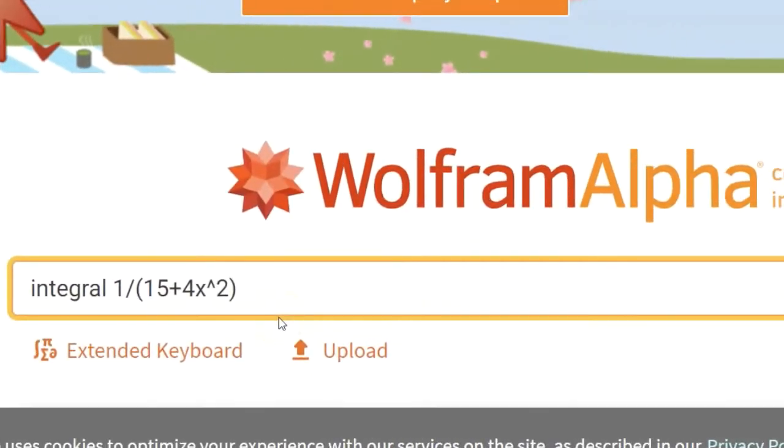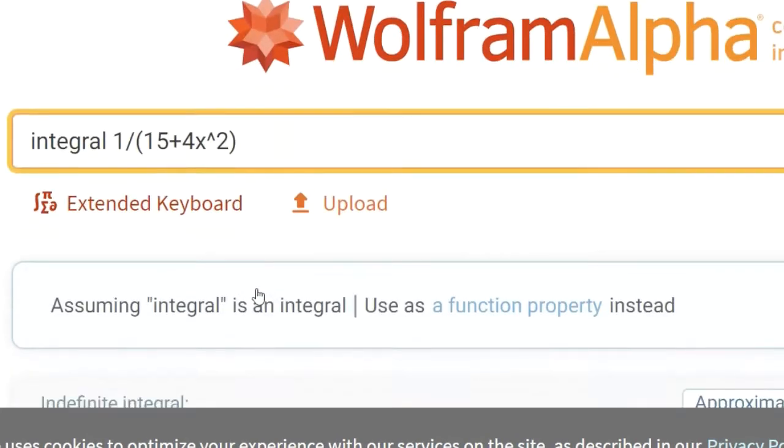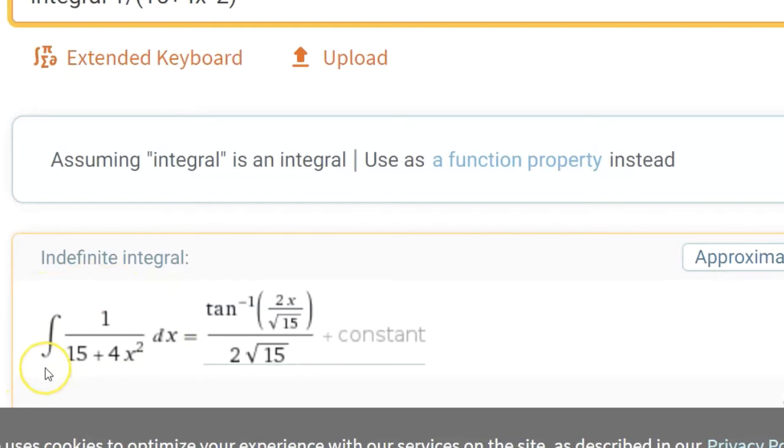So after all that work at the whiteboard, let's just confirm our work using Wolfram Alpha. I've typed in just integral of and Wolfram Alpha accepts the kind of abbreviated problem here, just 1 over 15 plus 4x squared. And when we check that, first of all, check to see that it inputted what we wanted and certainly it did. And then let's see if it outputted what we wanted.